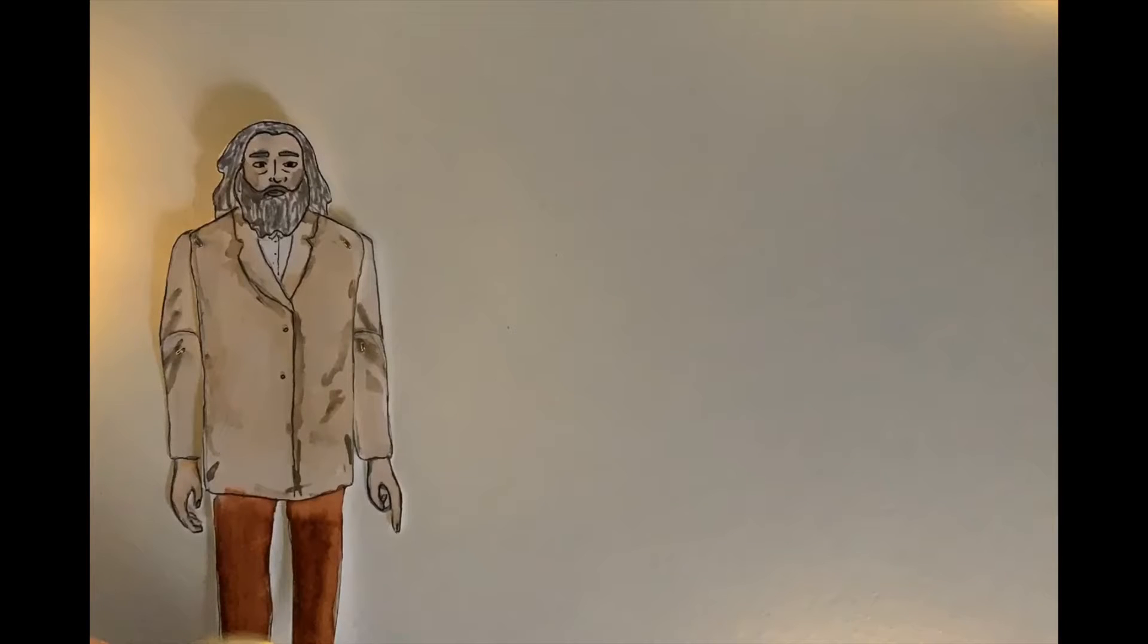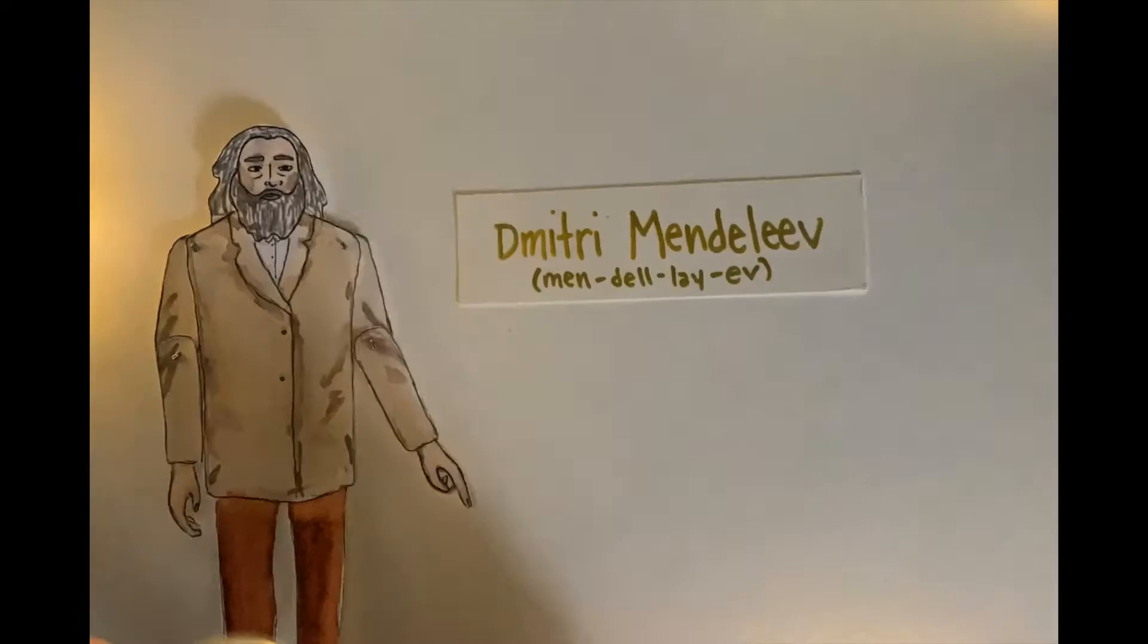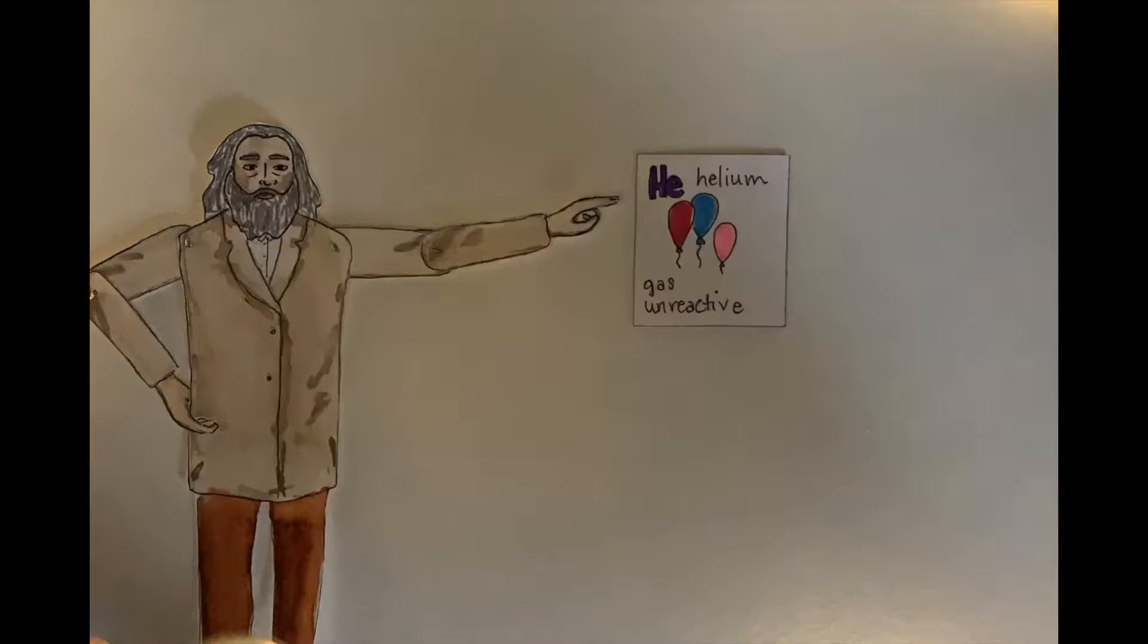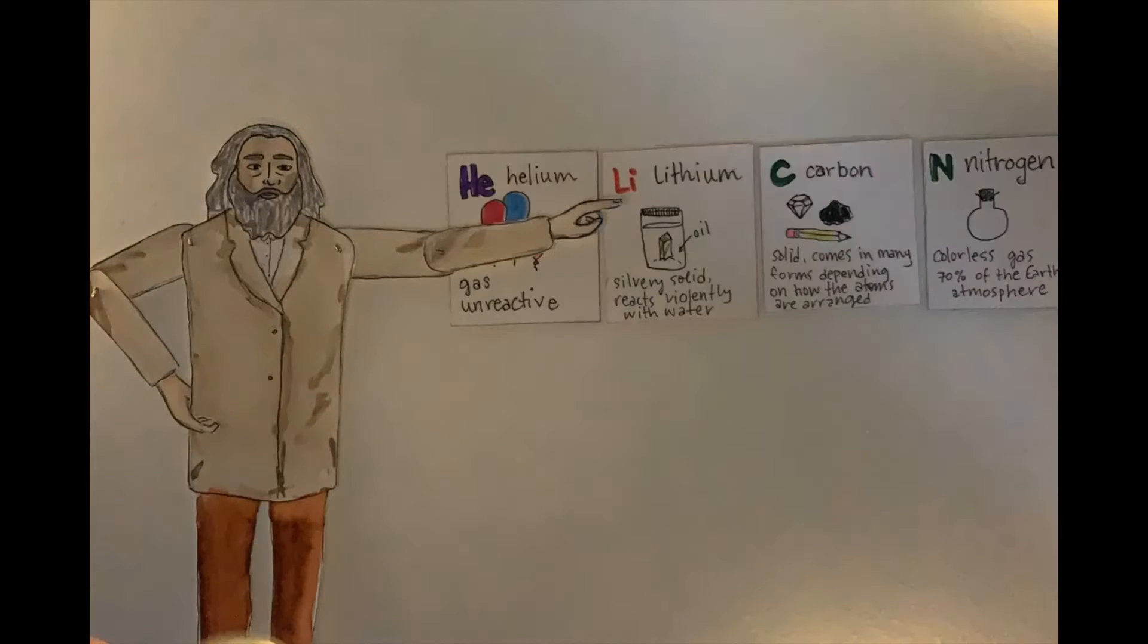Once upon a time, there was a scientist named Dmitry Mendeleev. Dmitry studied the elements and noticed something important about them. Many of them seemed kind of similar.